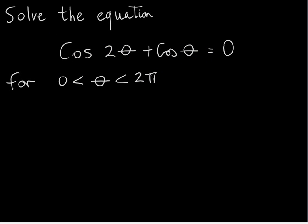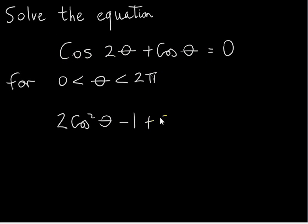The identity we use for cos 2θ is 2cos²θ − 1. So that's what we replace cos 2θ with, and writing out the rest of the equation we now have an equation just involving 1θ, and the functions are the same.